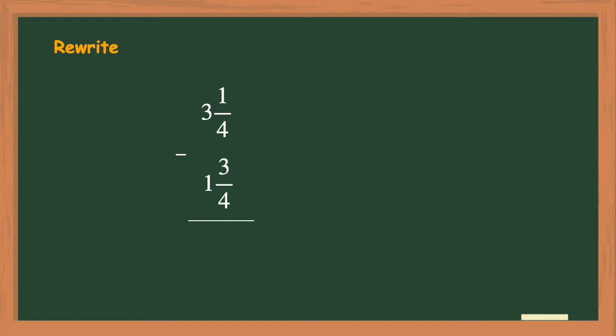Before I begin subtracting I always look at the denominators of the fractions. If they are the same as they are here I can begin subtracting. I will just need to subtract the numerators of 1 minus 3 but wait I can't subtract 3 from 1 so I will need to borrow from the whole number of 3.